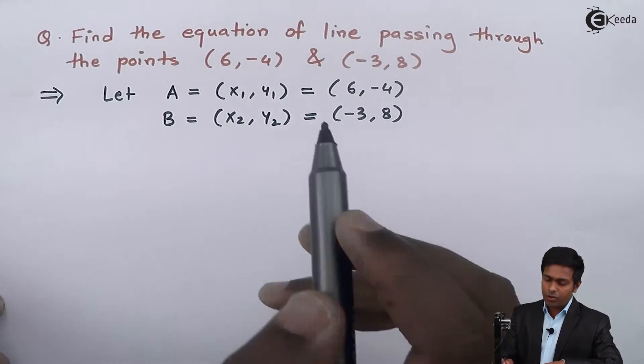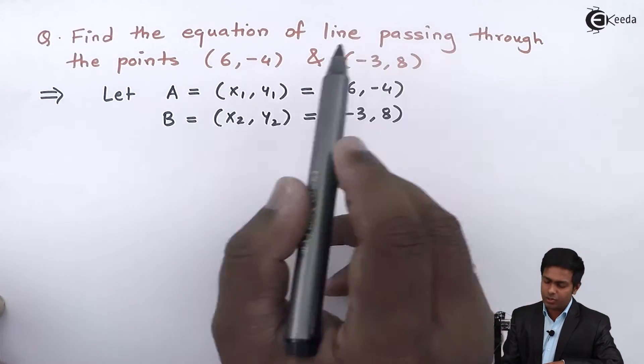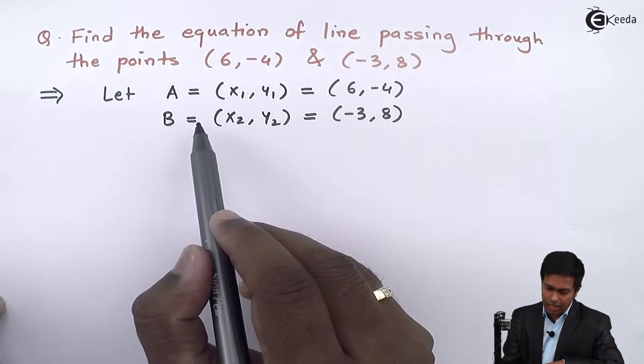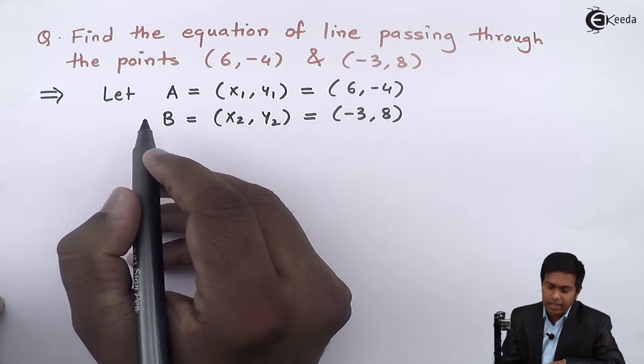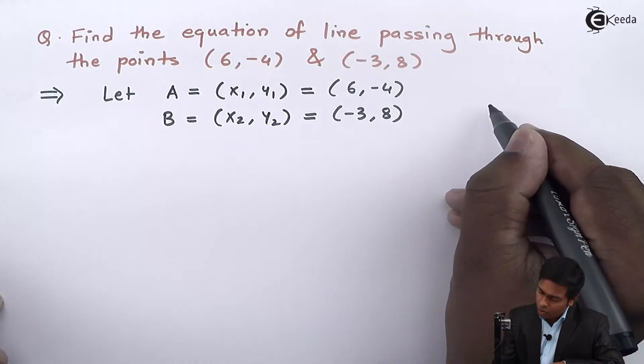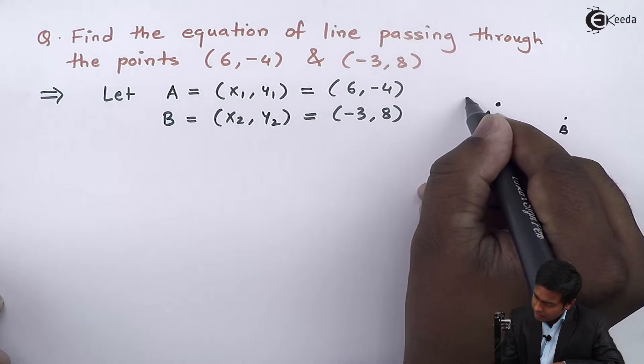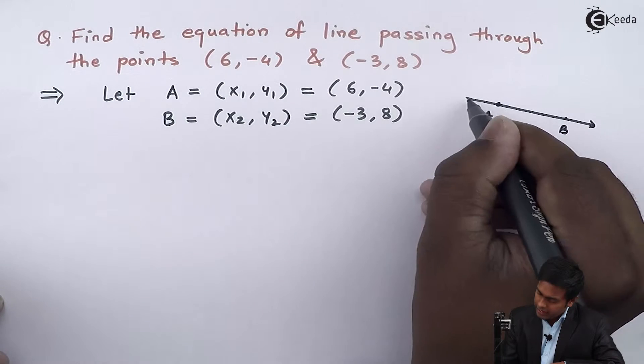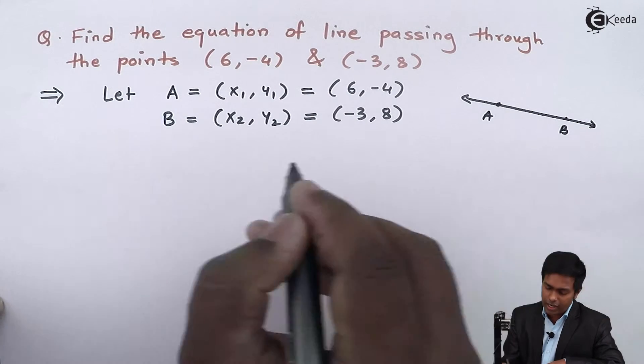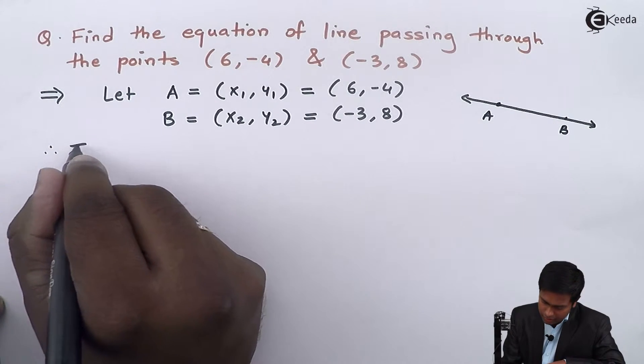Now we want to find the equation of the line passing through these two points. Since the line is passing through A and B, we can say the name of the line is AB.